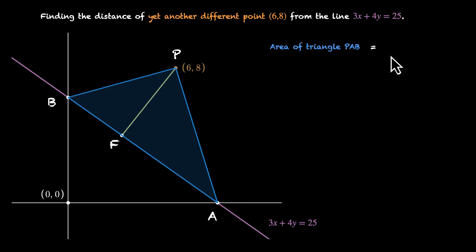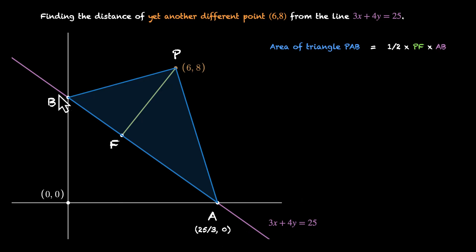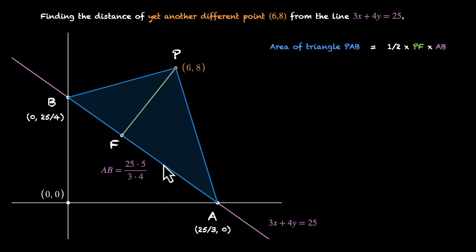We can follow the same approach: find the area of triangle PAB. Area of triangle PAB equals half times PF times the base AB. We know AB — A is (25/3, 0) and B is (0, 25/4), and using the distance formula we get AB equals 25 times 5 by 3 times 4, the same length as before. So we know AB and we need PF; all we need to do is figure out the area of triangle PAB.